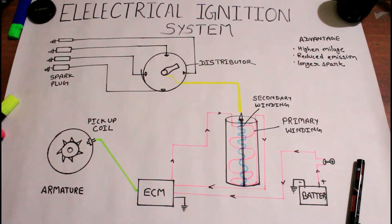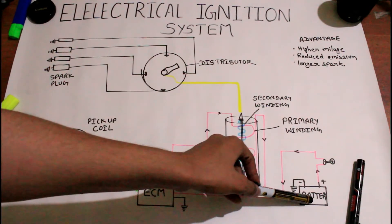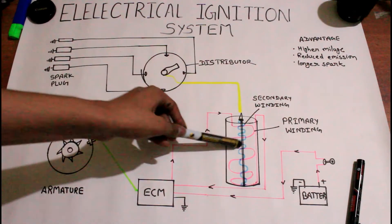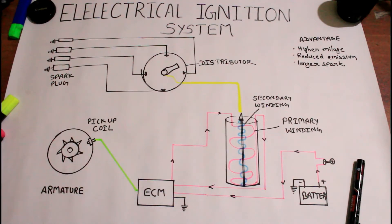What happens is whenever we turn on the ignition switch, the current flows from the battery to the ignition switch to the primary winding. Here you can see the pink line is the primary winding.